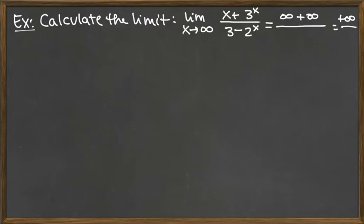Now taking a look at the bottom, we've got that constant 3, and then we've got to subtract what happens to 2 to the X. Well, 2 to the X is an exponential growth function because the base 2 is bigger than 1, and so the constant 3 out front doesn't really matter because the negative infinity that goes with it is what's dominating.